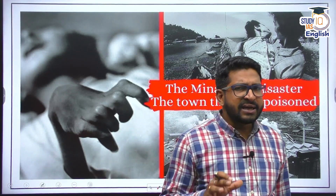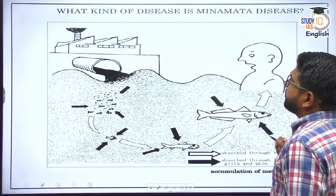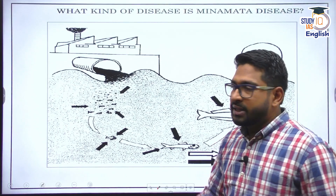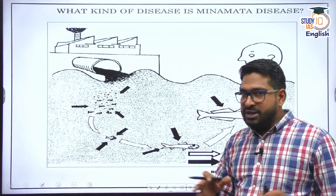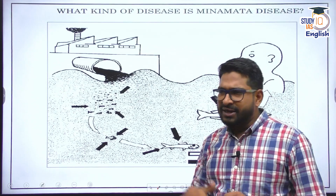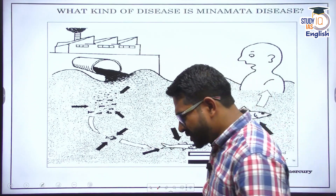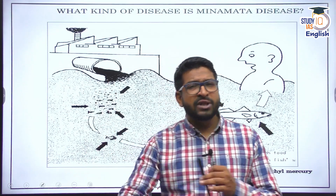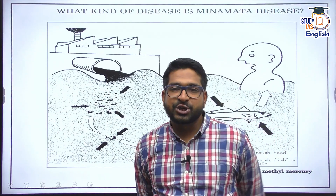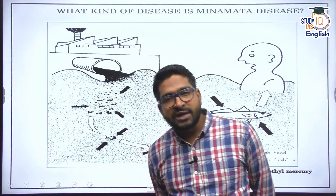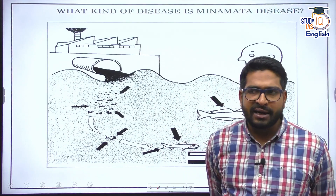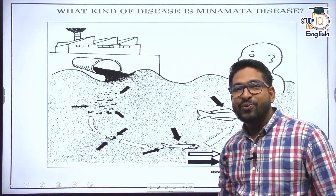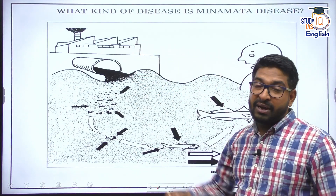The incident occurred in Minamata. There was a company called Chisso Limited which used to produce chemicals, including acetaldehyde. Initially during the Meiji restoration era the company made rail lines, but slowly entered chemical production. In the 1940s and 50s they started producing acetaldehyde using mercury, and one of the byproducts — methylmercury — was dumped into the waters, into the Minamata Bay area.